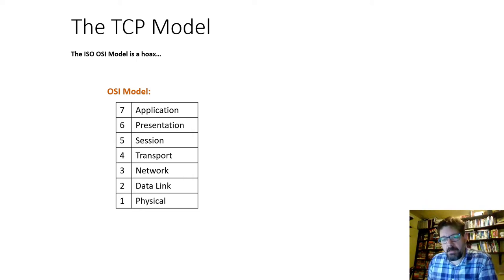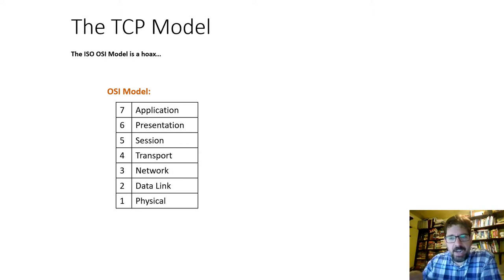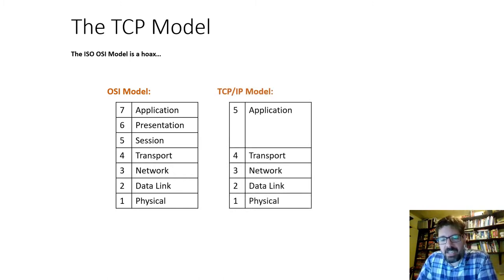Let's start with the TCP model. Almost every networking textbook starts by talking about the OSI model and this idea of layers that are abstracted from one another. The textbooks are right that it's a lot about abstraction. But the thing about OSI is it's not real — it was never really implemented anywhere. The actual model that was implemented was the TCP/IP model.